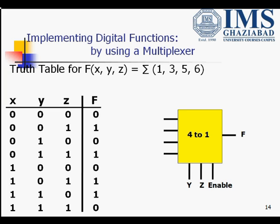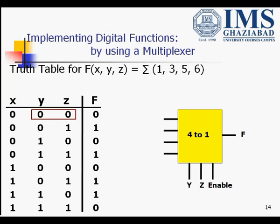Variables y and z behave as the selector lines for this multiplexer. When y and z are 0,0: in the first place x=0 and function value is 0; in the second place x=1 and function value is again 0. That is, irrespective of the value of x, the function value is 0. So when y,z = 0,0, the first input to the multiplexer would be 0.